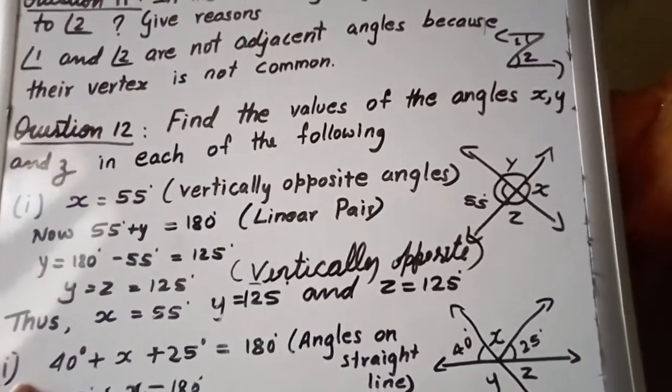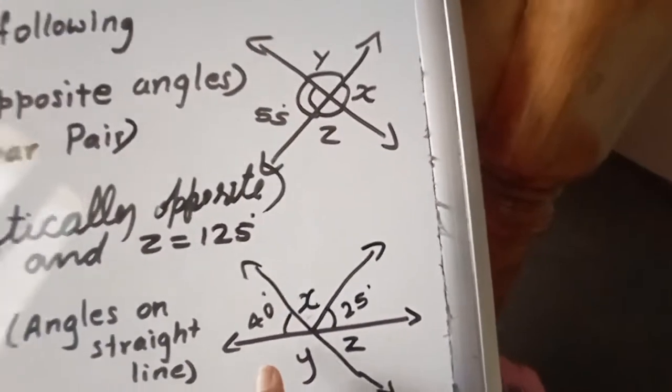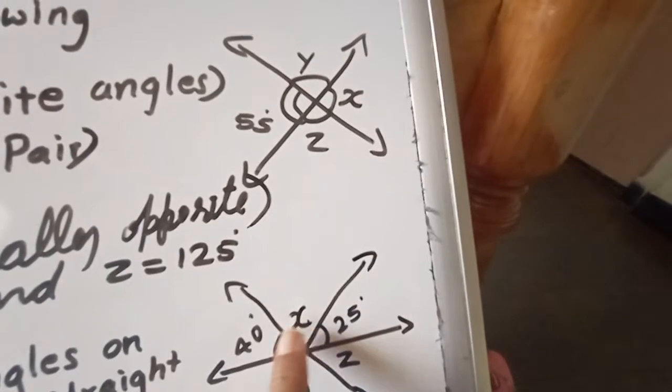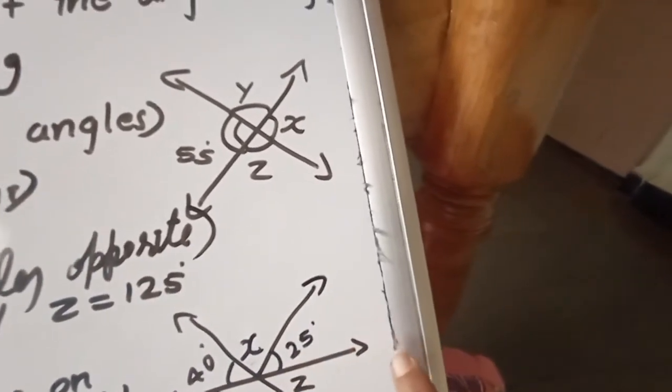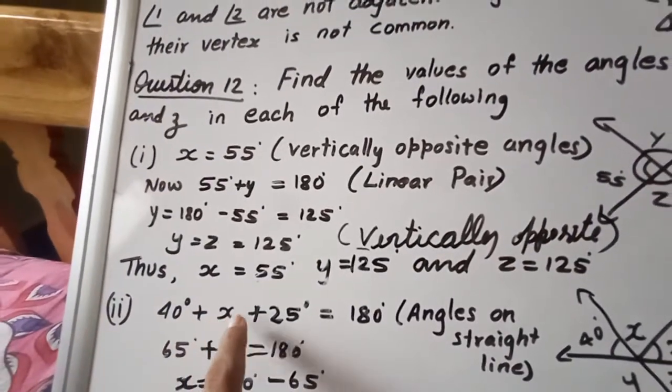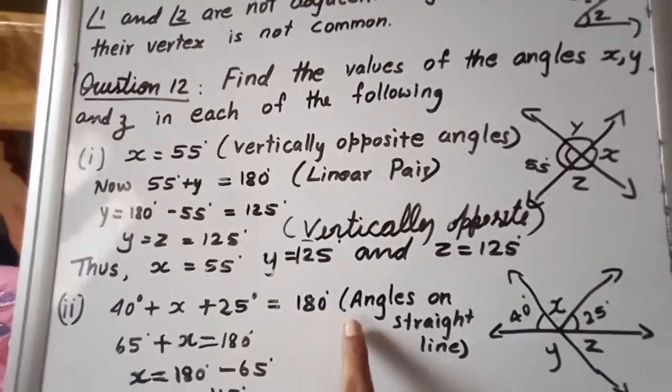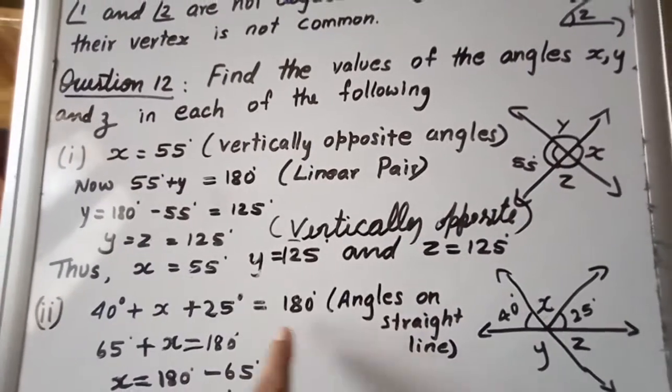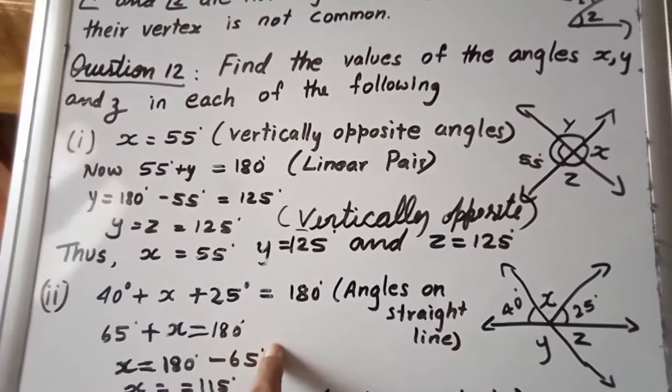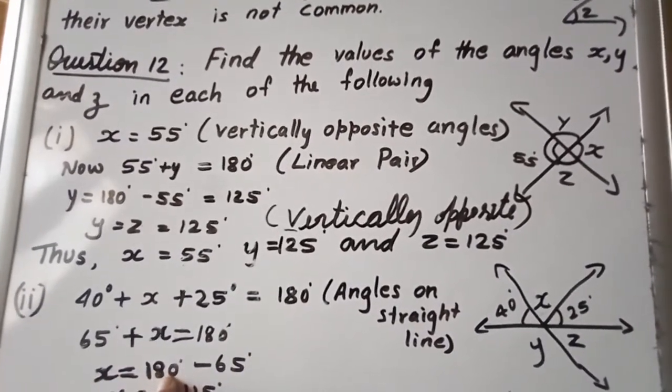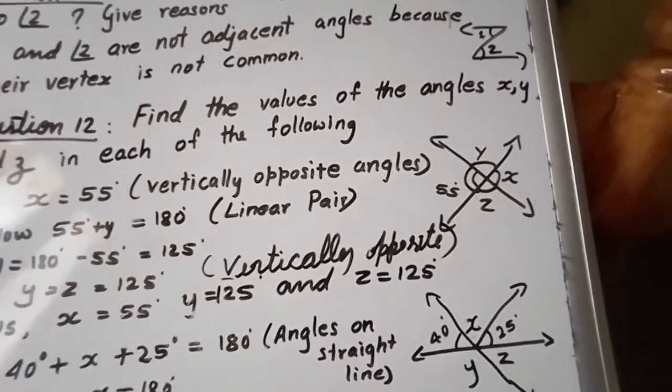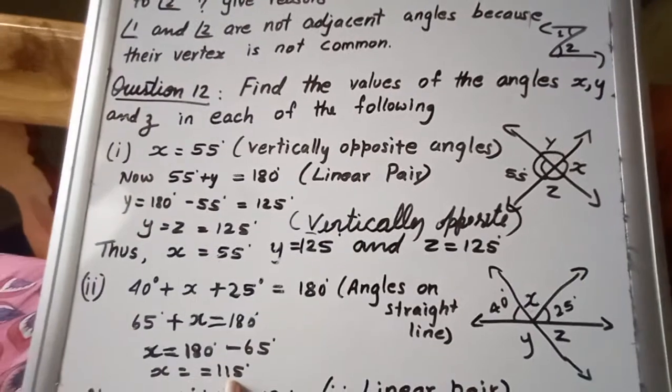Now let us go to the next one. Here they have given the picture. Here the picture is 40 degree, X, 25. You can very easily find out the X because it is one of the straight line. Straight line indicates 180 degree. 40 plus X plus 25 is equal to 180. Angles on straight line, 40 plus 25 becomes 65 plus X is equal to 180 degree. X is equal to 180 minus 65. Hope you got the value X is equal to 115.